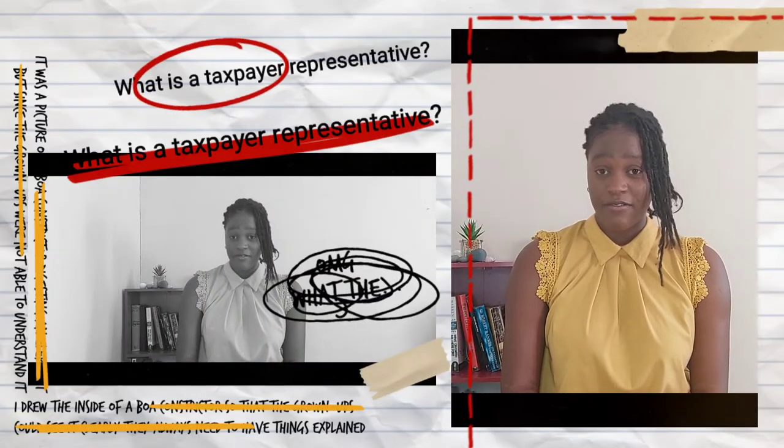The next frequently asked question is: what is a taxpayer representative? A taxpayer representative is a person that completes taxes on behalf of another person. For companies, for example, the company can't complete their taxes on their own, so NAMRA requires that every company appoints a specific person to represent them — completing tax returns, submitting them, and making sure the company complies with the relevant rules.